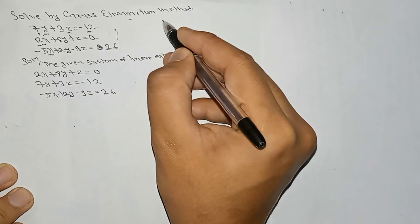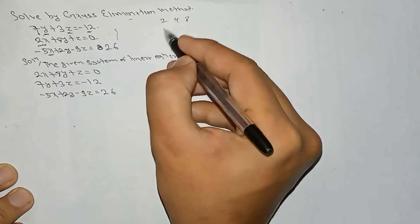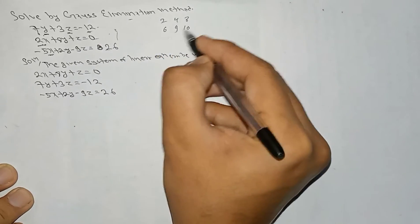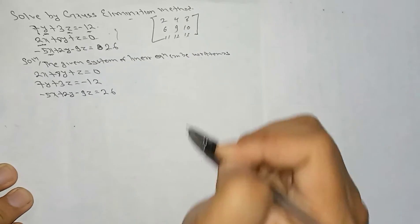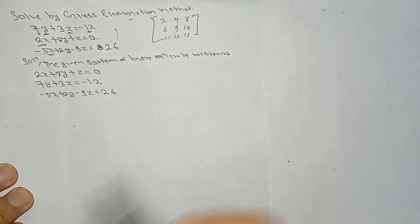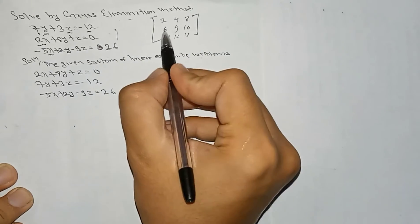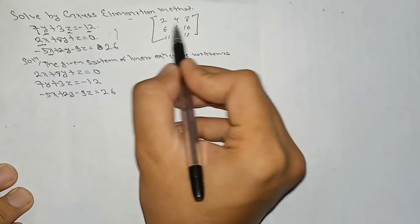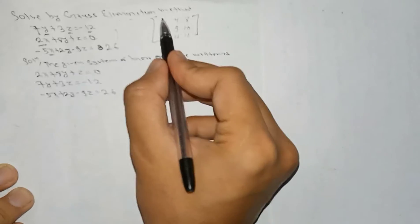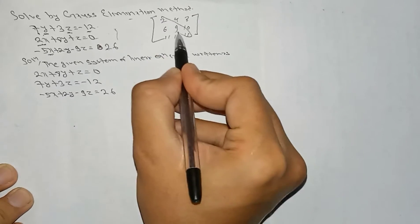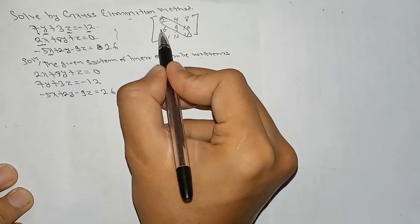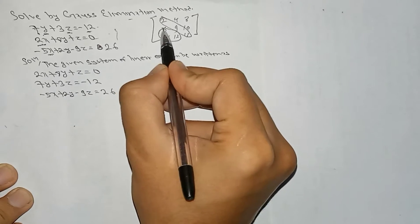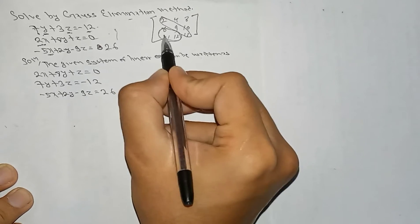This is the matrix: 2, 4, 8, 6, 9, 10, 11, 12, 13. To find the solution by Gauss elimination method, we have to convert this matrix to upper triangular matrix form. Upper triangular matrix means this is the leading diagonal, and we have to make the lower part zeros.